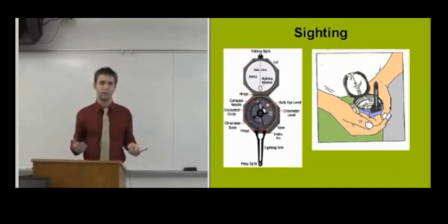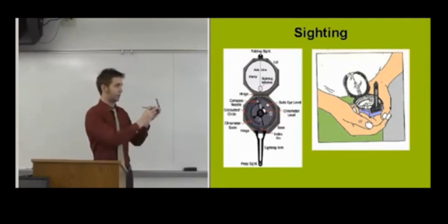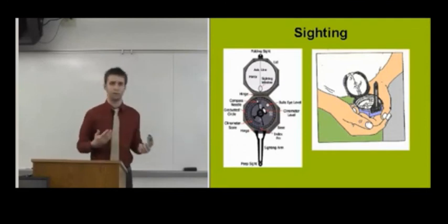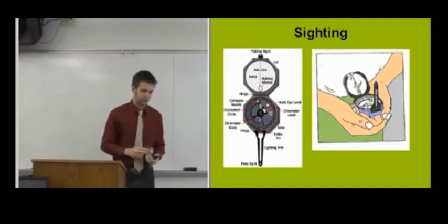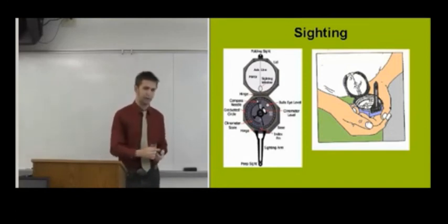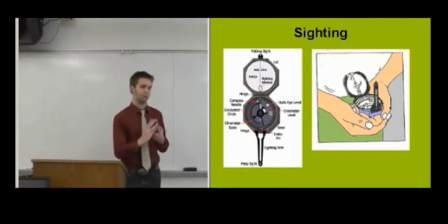So when you're utilizing triangulation, I like to use this method most. However, if it's something closer around, I'll use this method. But keep in mind, if you're using this method, long sight out, you're going to read the white arrow. If you flip the compass around, you'll want to read the black arrow.